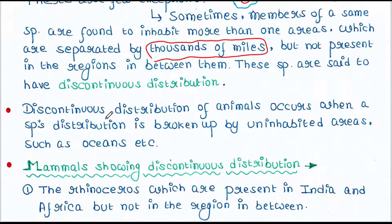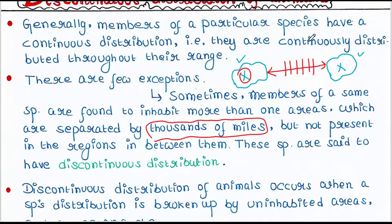Discontinuous distribution of animals occurs when a species' distribution is broken up by uninhabited areas such as oceans. Their distribution is broken up, so most probably there is an ocean or some other barrier in between, and that is why in that place they cannot survive.